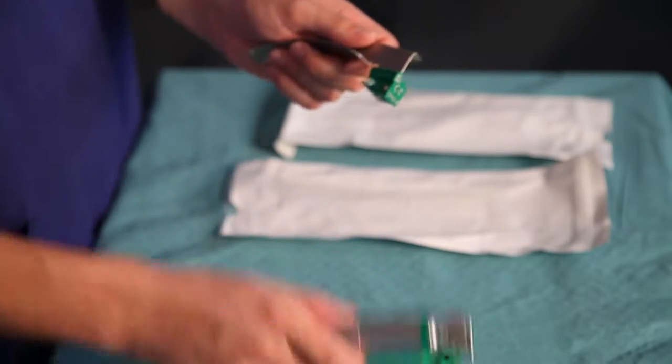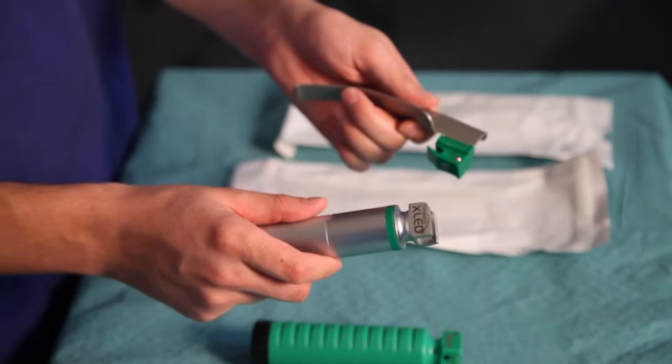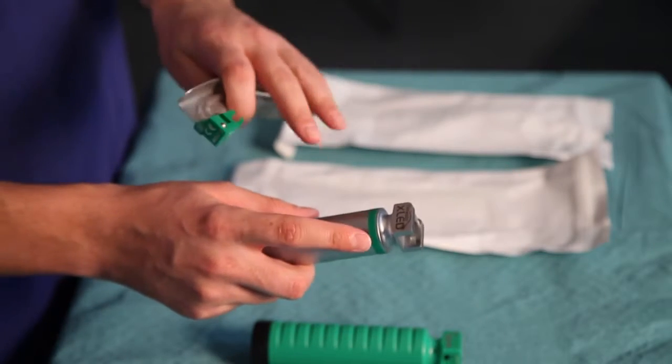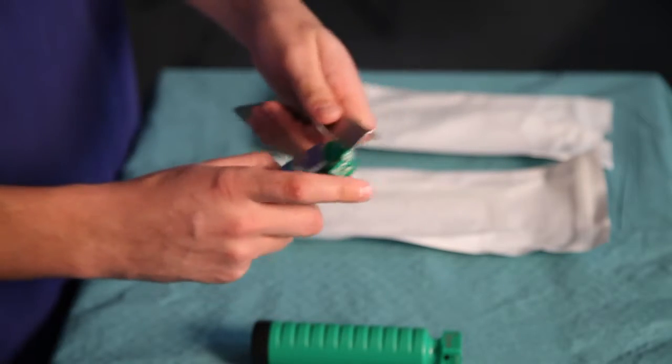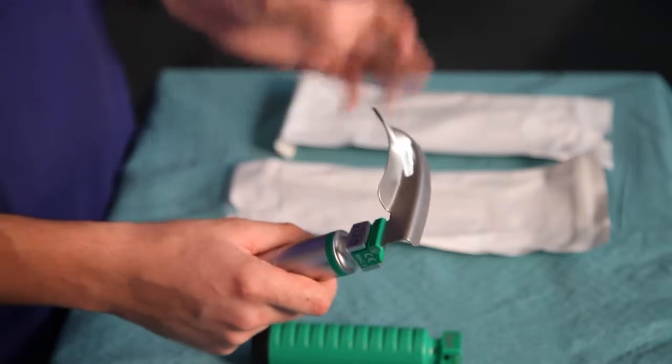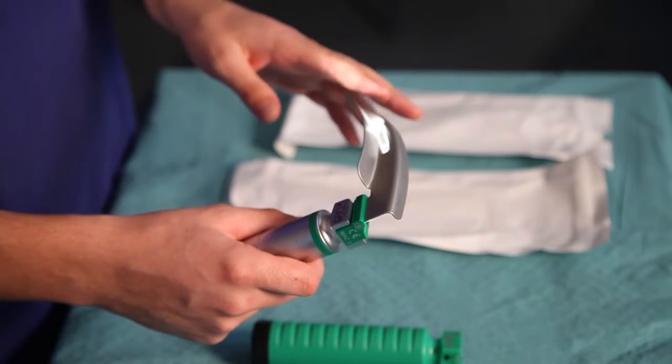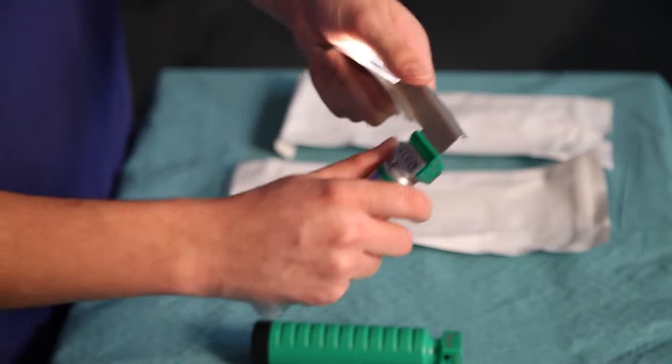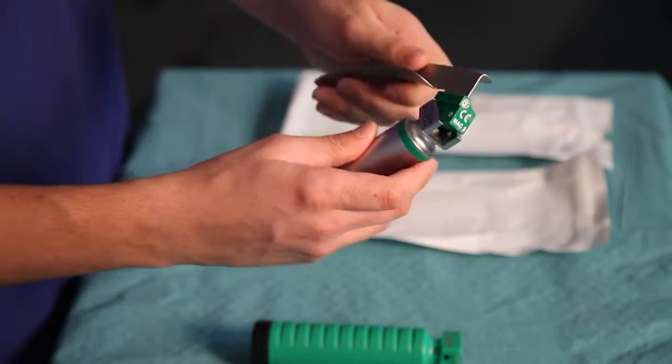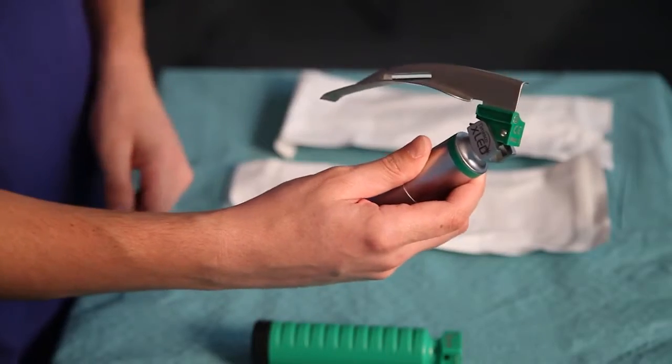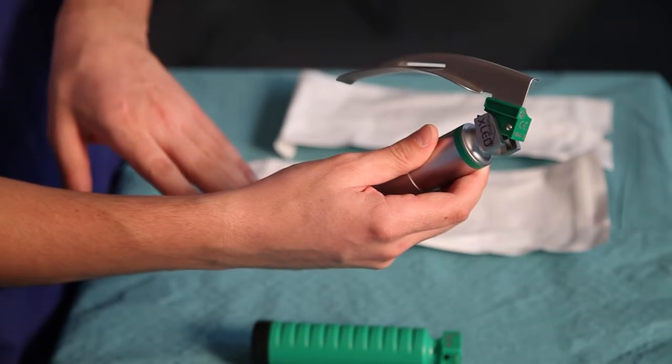If you're looking to use a reusable handle with a single-use blade, you've got the ISO 7376 spec so this is fully compatible. There's also an extra benefit of non-touch, which means that the blade will never touch the handle at rest, which is great for cross-contamination reduction.